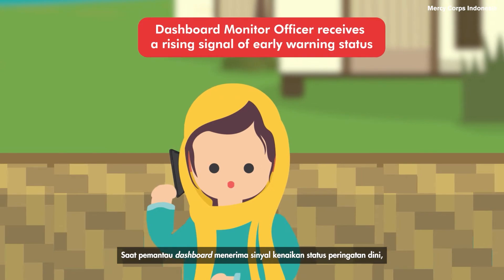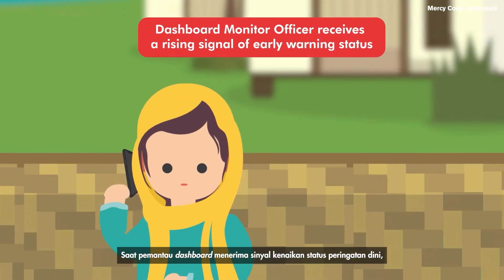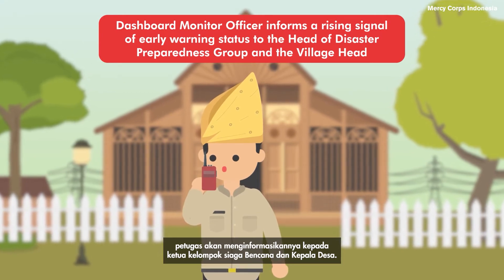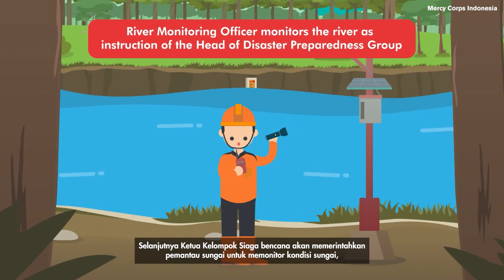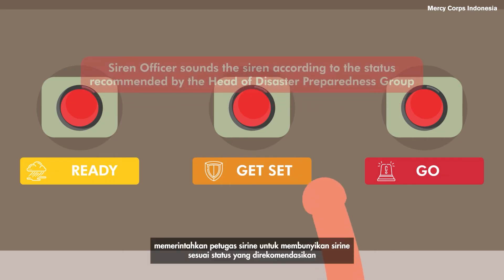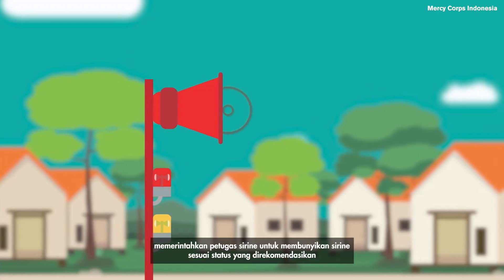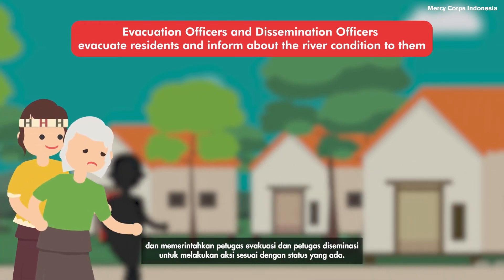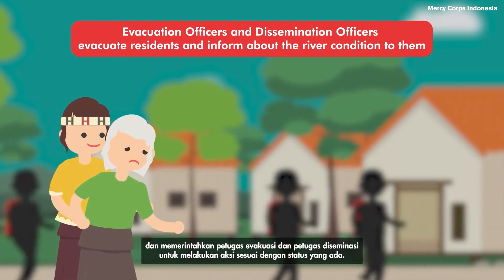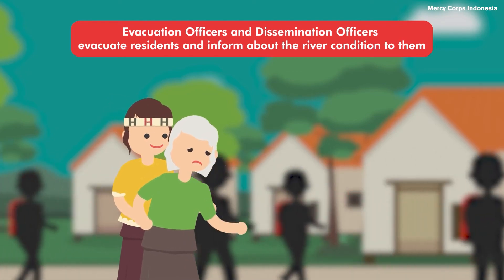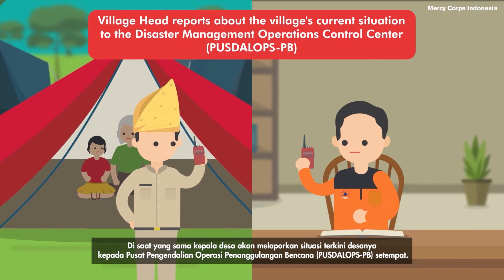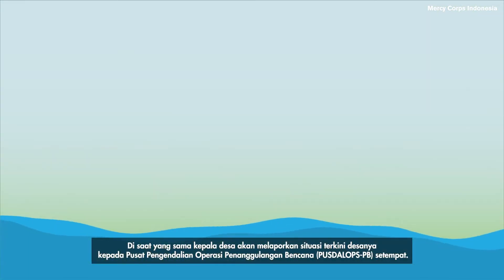When the dashboard display receives a signal of rising early warning status, the officer will inform the head of the disaster preparedness group and the village head. The head of the disaster preparedness group will then order the river monitor officer to monitor the river, instruct the siren officer to ring the siren according to the recommended status, and instruct evacuation and dissemination officers to act accordingly. Meanwhile, the village head reports to the local disaster management operation control center regarding the current situation.